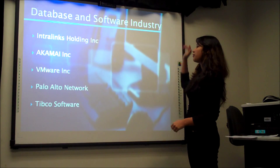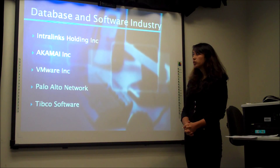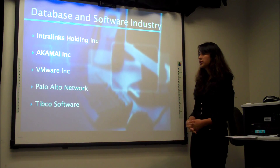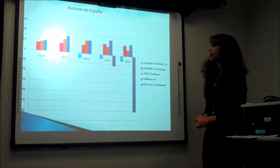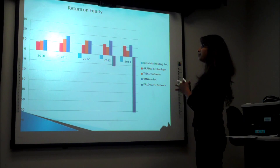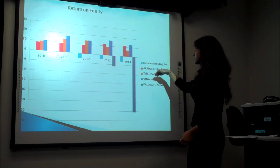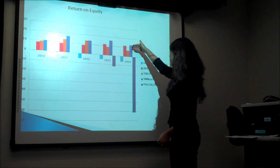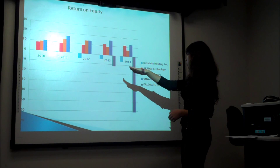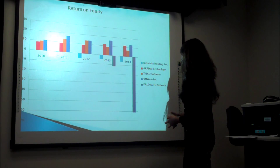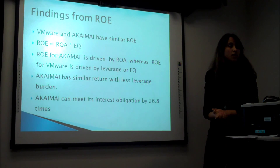Let's move on to the database and software industry, under which we have five different competitive companies: Interlink Holding Inc., Akamai Inc., VMware, Palo Alto Network, and Tibco Software. This is our ROE data graph for the five companies under database and software. We can see that VMware and Akamai are almost similar when it comes to ROE, followed by Tibco Software, while Interlink and Palo Alto are in negative, which is not considered very good.